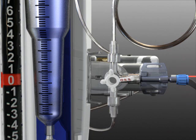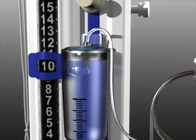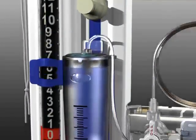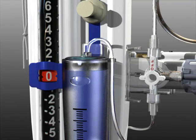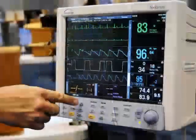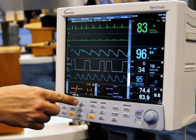Start by turning the main system stopcock off to the patient, but allowing communication between the transducer and the drip chamber. Lower the drip chamber until the pressure indicator window is centered at zero on the pressure scale. Press the zero button on the bedside monitor.